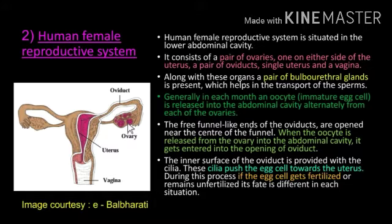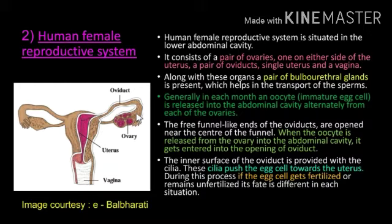In one month the oocyte is released from one ovary, and in the next month from the other ovary. The free funnel-like end of the oviduct has an opening at its center, and the funnel has finger-like projections. These finger-like projections suck the egg cell that has been released into the abdominal cavity.